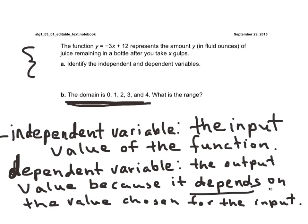So the range, well, if I plug in 0, negative 3 times 0 plus 12 would be 12. If I plug 1 in, negative 3 times 1 is negative 3 plus 12 is 9.